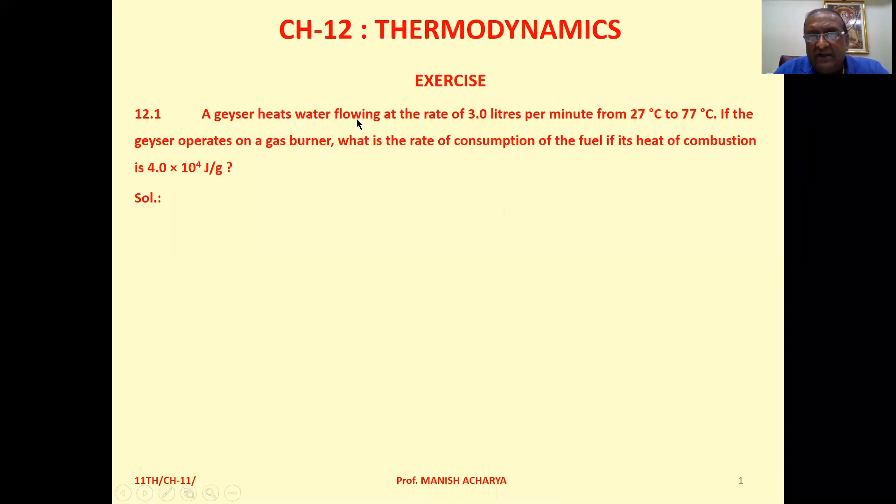Now chapter 12, exercise, example 12.1. A geyser heats water flowing at the rate of 3 litres per minute from 27 degrees Celsius to 77 degrees Celsius. If the geyser operates on a gas burner, what is the rate of consumption of the fuel if its heat of combustion is 4 into 10 raised to 4 joules per gram.